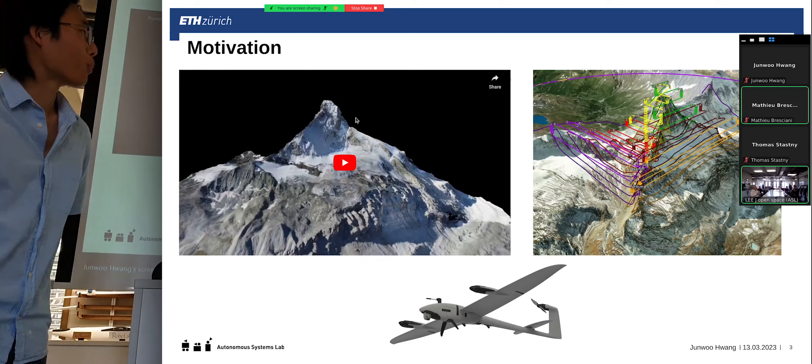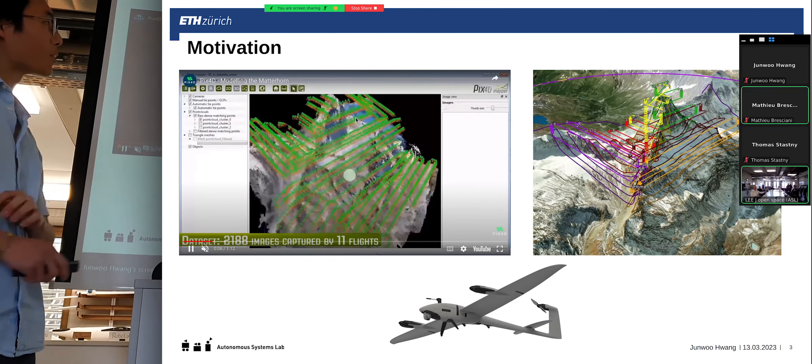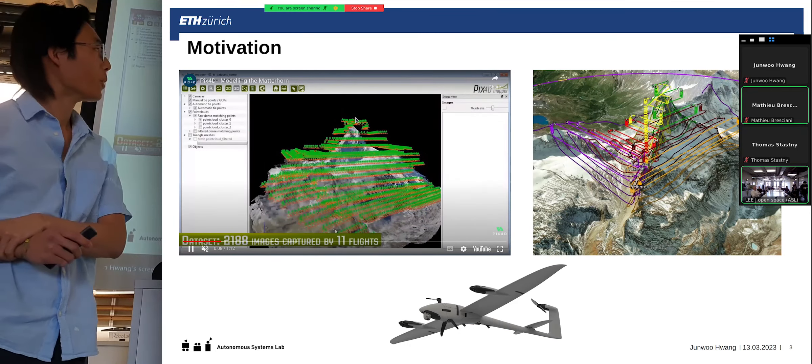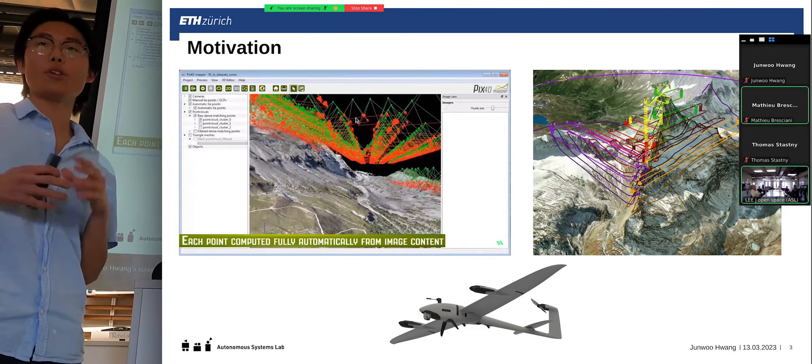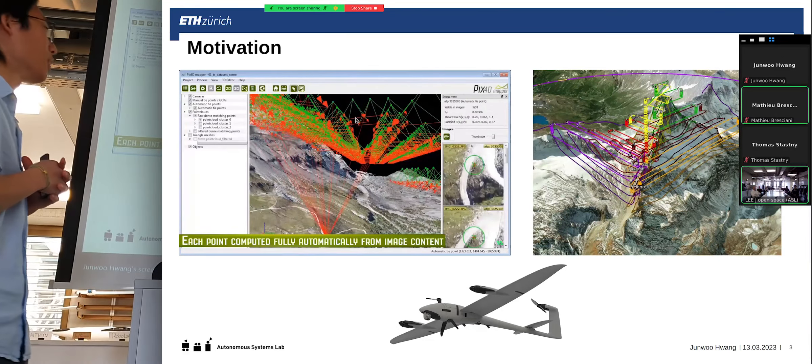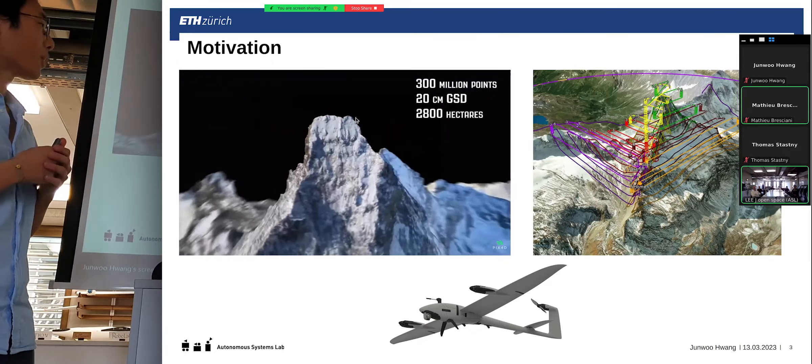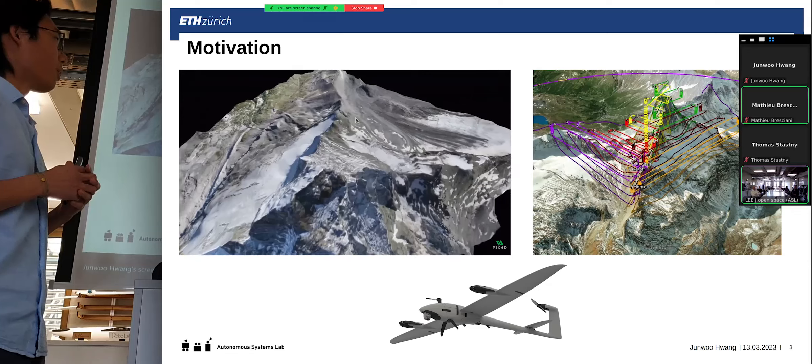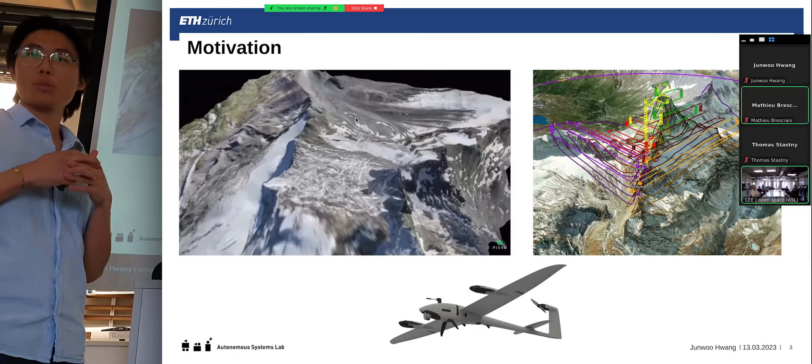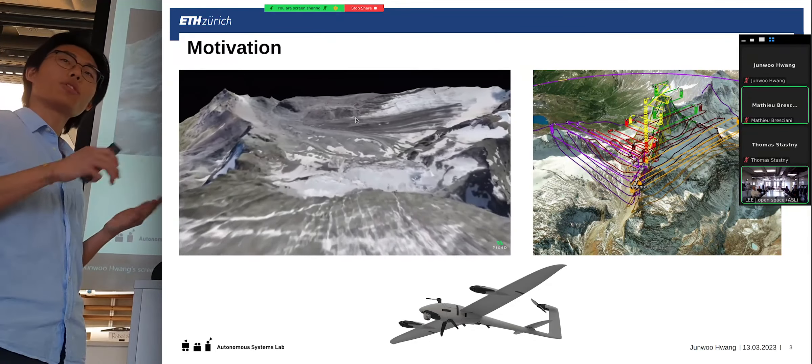This shows PIX4D, a private company's mission on mapping the Matterhorn, which involved 20 or 15 different flights while the UAV launched from the top of the mountain using sophisticated path-following, and then it resulted in a 3D topological map. For this, of course, the path-following is important because you want to capture the key points of interest.